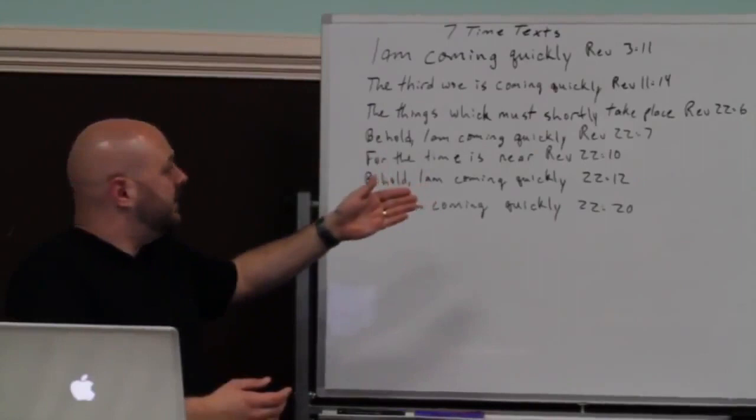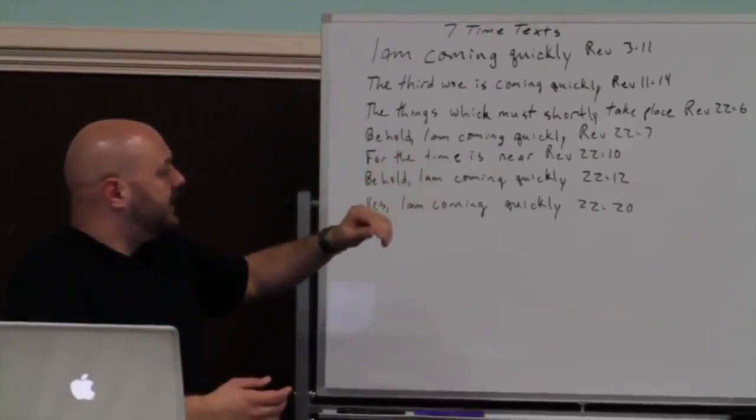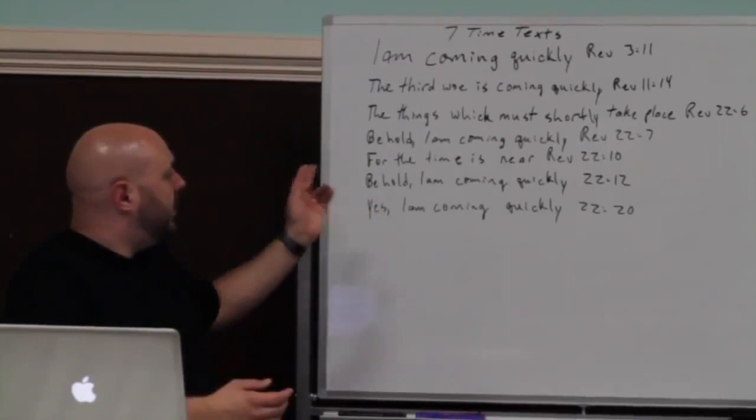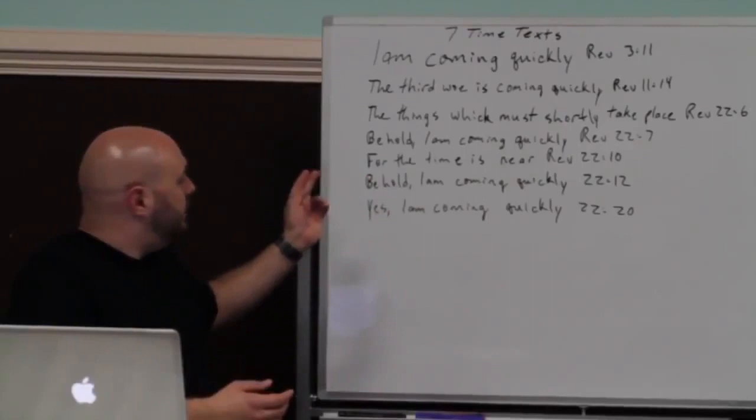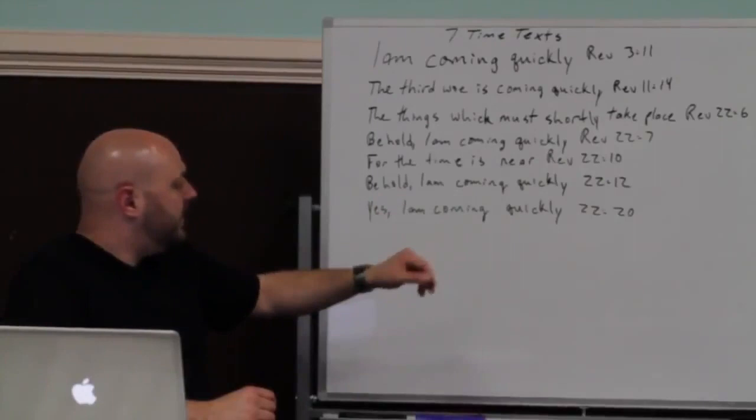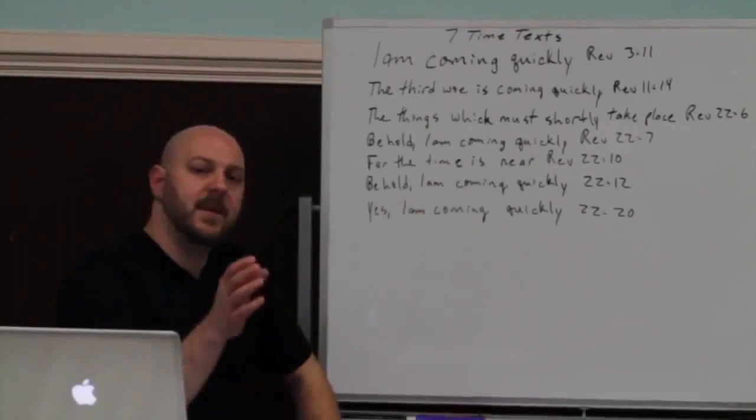It says in Revelation 3:11, I am coming quickly. It says in Revelation 22:6, the things which must shortly take place. Revelation 22 verse 7, behold, I am coming quickly. Revelation 22 verse 10, for the time is near, now that's proximity as well as time. And then we have Revelation 22 verse 12, behold, I am coming quickly. And then Revelation, lastly, 22 verse 20, yes, I am coming quickly.